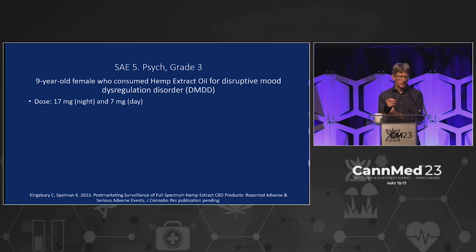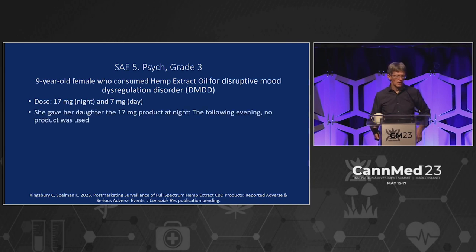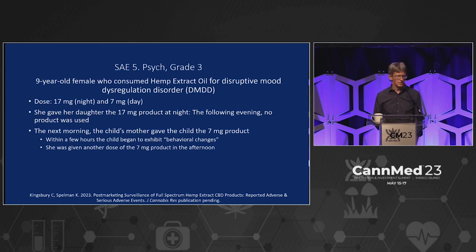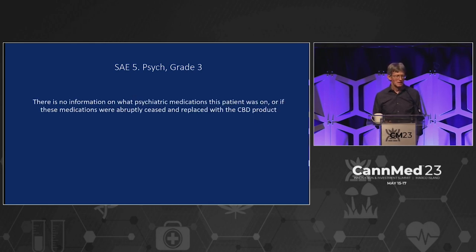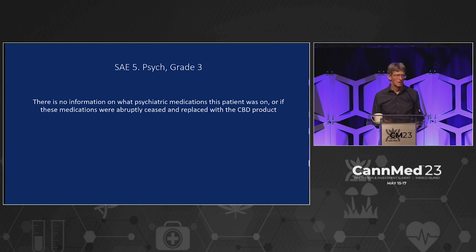This one involves disruptive mood dysregulation — a nine-year-old female using 17 milligrams at night and 7 milligrams during the day. The mother gave the daughter the 17-milligram product at night. The following evening no product was used, so about 24 hours. The next morning — roughly 36 hours — the mother gives the child the 7-milligram product. Within a few hours the child began to exhibit behavioral changes. She was given another dose in the afternoon, then became angry, punched her mother and her mother's boyfriend, and began yelling suicidal statements. There's no information on what psychiatric medications this patient was on, or if those medications were abruptly ceased and replaced with the CBD product. So it's hard to pin this to the product itself.